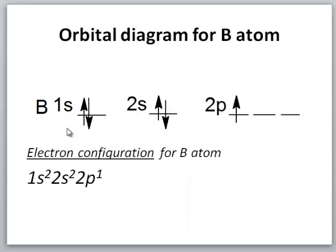Here we have an orbital diagram for a boron atom — five electrons. The first four are in 1s and 2s as we've already seen. The fifth electron goes into 2p. By convention this electron appears in the leftmost orbital pointing up, although in real life it could be in any one of the three orbitals with either m sub s plus one-half or minus one-half. The electron configuration presents this information in condensed form: 1s2 indicates two electrons in the 1s orbital, 2s2 indicates two electrons in the 2s orbital, and 2p1 indicates one 2p electron.